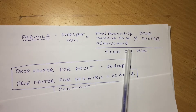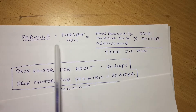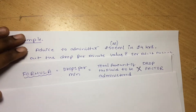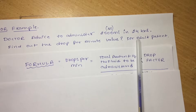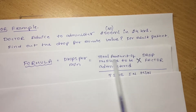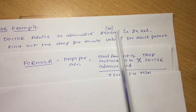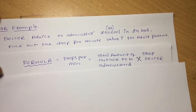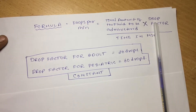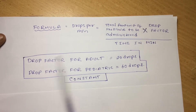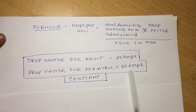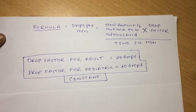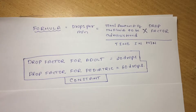The doctor has advised to give 2500 ml of NS over 24 hours, so the total amount of fluid to be administered is 2500 ml. The drop factor for adults is 20 drops, and for pediatric patients it is 60 drops. These drop factors are fixed constants — 20 for adults, 60 for pediatric — they do not change.